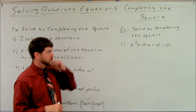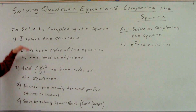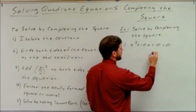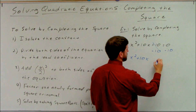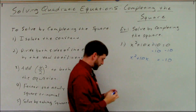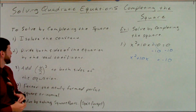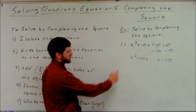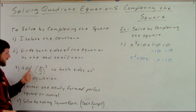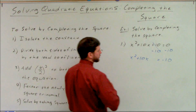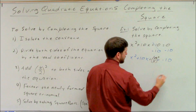Let's look at this example: solve by completing the square, x squared plus 10x plus 10 equals zero. Step one — isolate the constant. Let's subtract the 10 over, so we get x squared plus 10x equals negative 10. Leave a little space. Divide both sides by the lead coefficient — we already have a lead coefficient of 1, so that step is taken care of. Step 3: add B over 2 squared to both sides. My B is 10, so I'm going to add 10 over 2 squared to both sides.